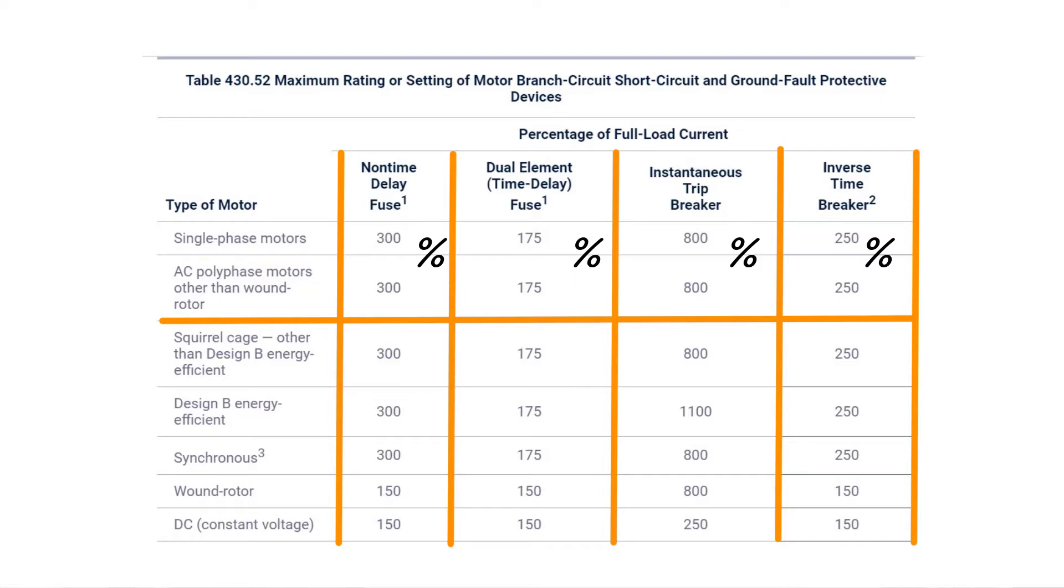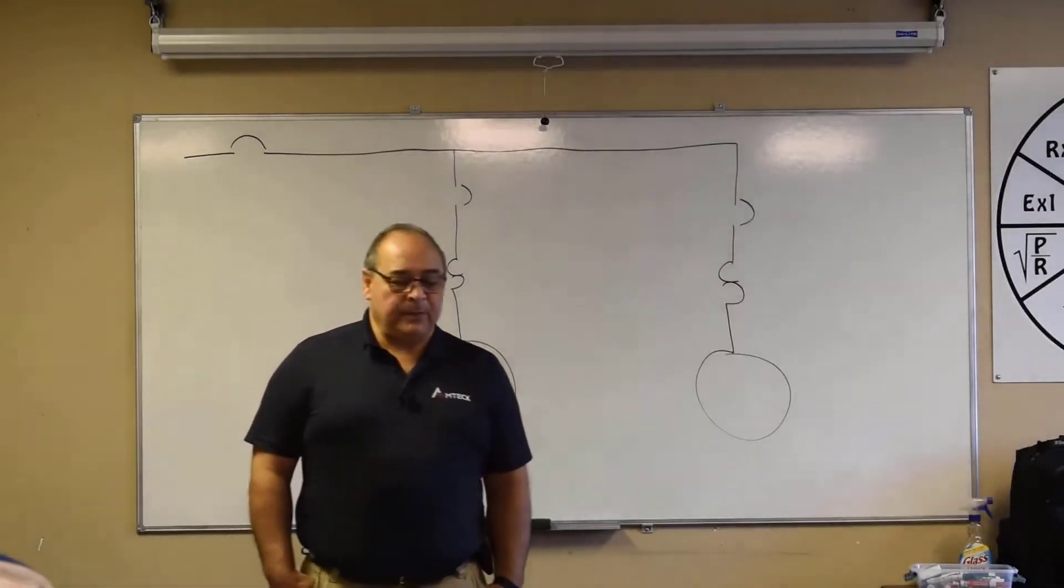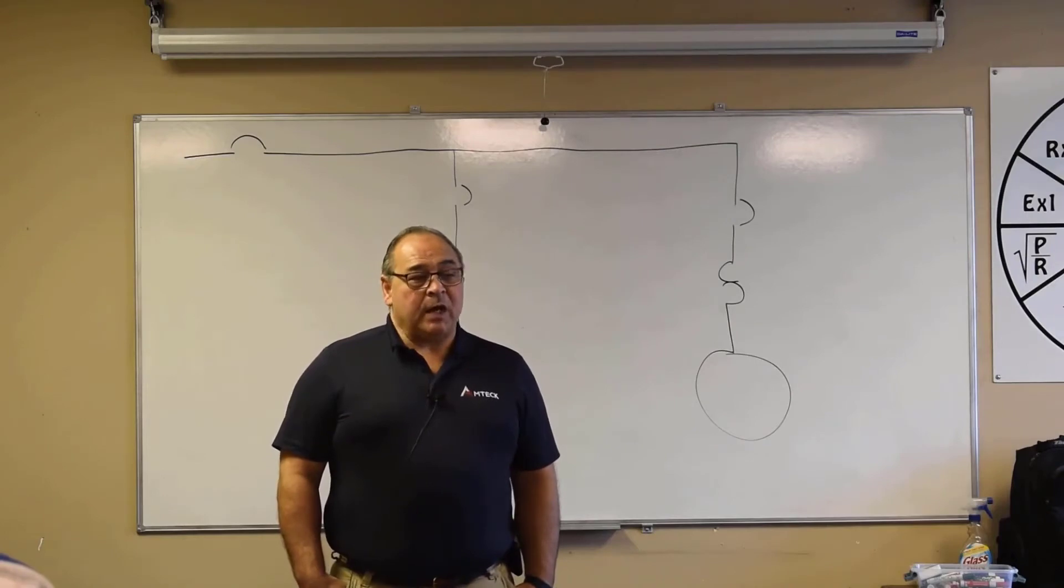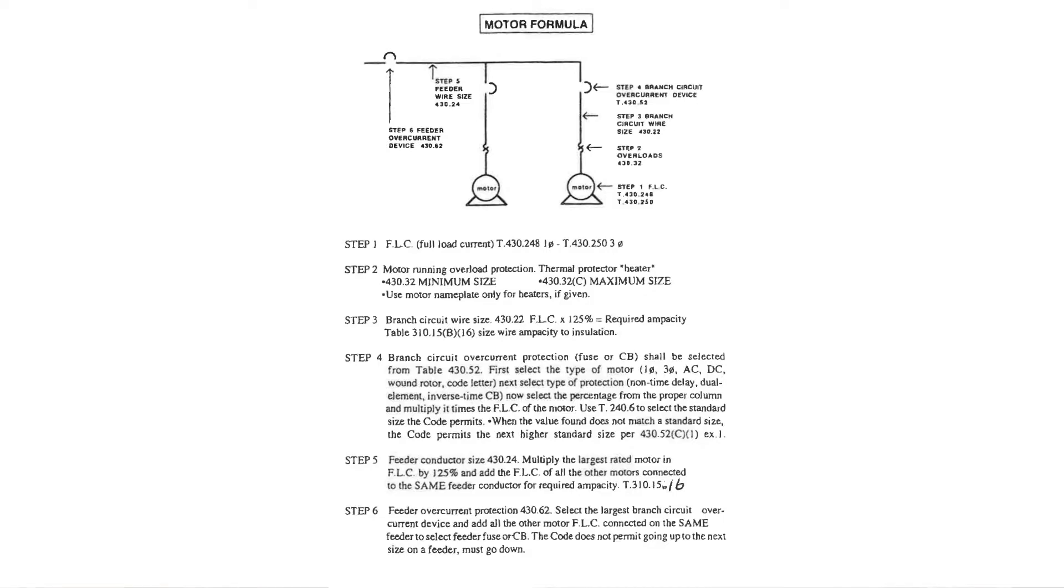800%. What's 800% times 50? 400. Now we're going to have that 400-amp breaker, instantaneous trip circuit breaker, with a number 6-gauge wire on it for this 50-amp load that's going to trip out at 62.5 amps. Number 6-gauge wire, 400-amp breaker. You guys with me? That's the right answer on test day. This is the hardest part. Step number four is the hardest part.